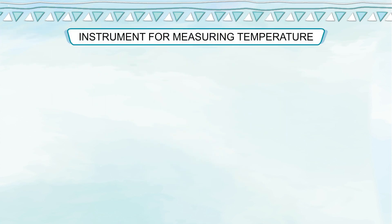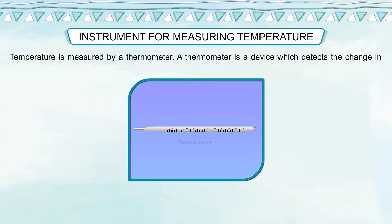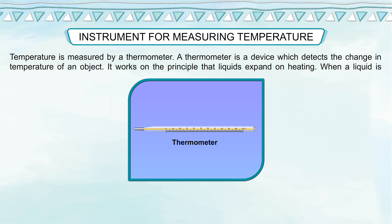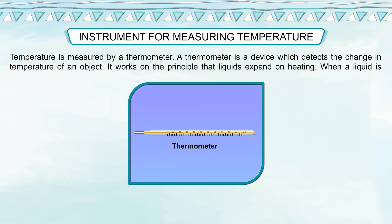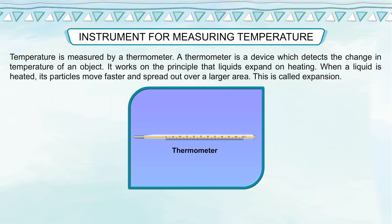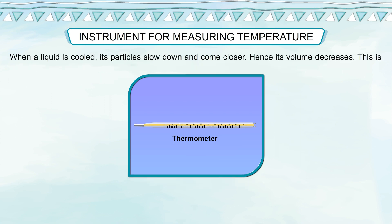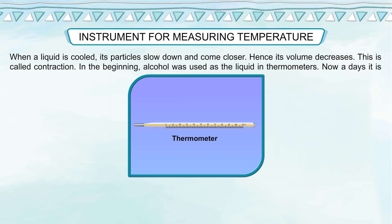Instrument for measuring temperature: Temperature is measured by a thermometer. A thermometer is a device which detects the change in temperature of an object. It works on the principle that liquids expand on heating. When a liquid is heated, its particles move faster and spread out over a large area — this is called expansion. When a liquid is cooled, its particles slow down and come closer, so its volume decreases — this is called contraction.